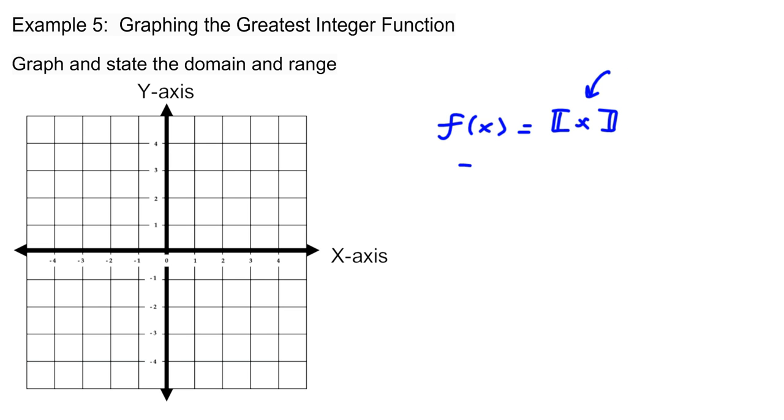Just a few examples: the greatest integer of 1.1 would be 1, because the greatest integer that you round down from 1.1 would be 1.